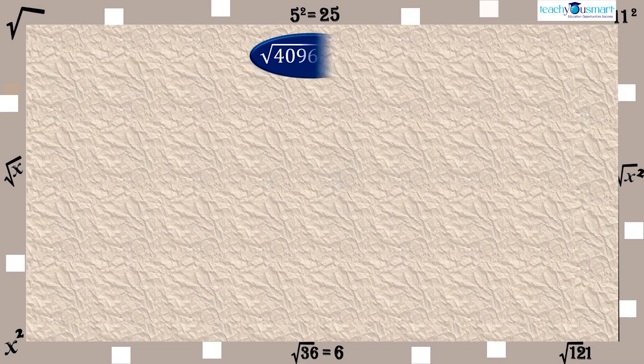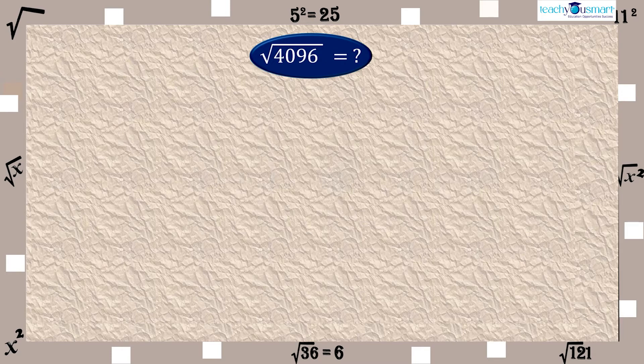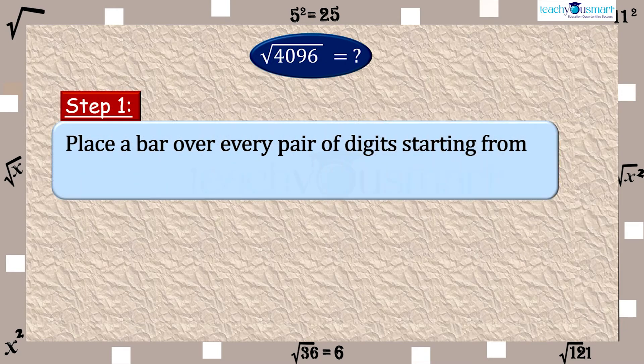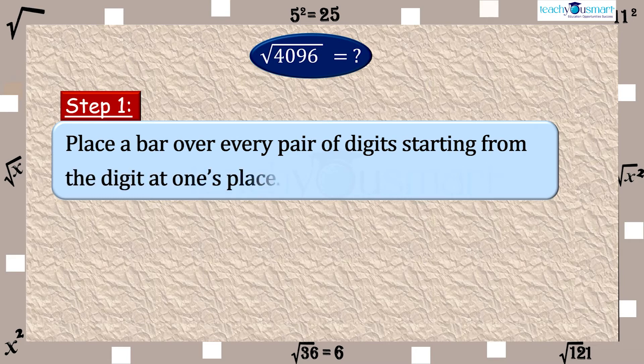Now consider square root of 4096. Step 1: Place a bar over every pair of digits, starting from the digit at one's place.